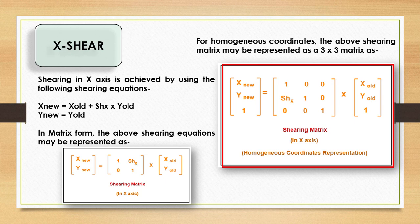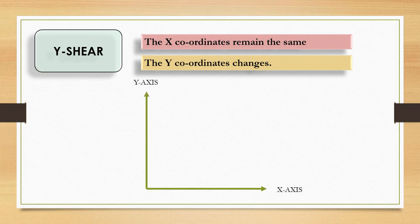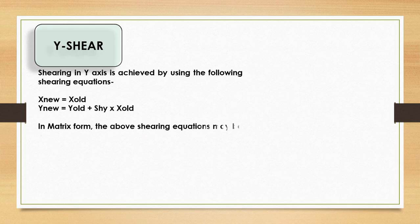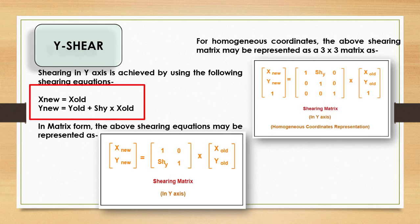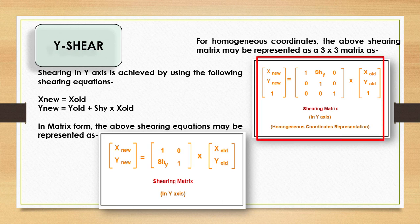In Y shear, the X coordinate value remains as it is and the Y coordinate values are changing. The object appears slanted in this way. Y shear can be mathematically represented as: X_new = X_old, Y_new = Y_old + Sh_y × X_old. In matrix format: [X_new, Y_new, 1] = [1, 0; Sh_y, 1] × [X_old, Y_old]. For homogeneous coordinates, the 3×3 matrix is: [X_new, Y_new, 1] = [1, 0, 0; Sh_y, 1, 0; 0, 0, 1] × [X_old, Y_old, 1].